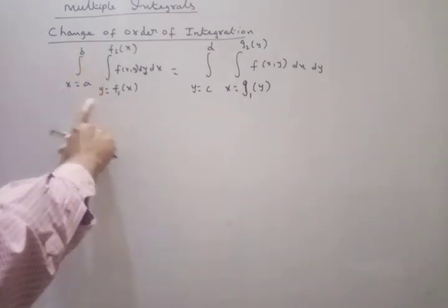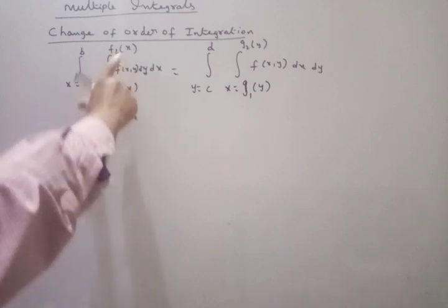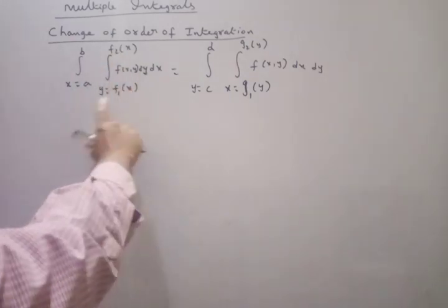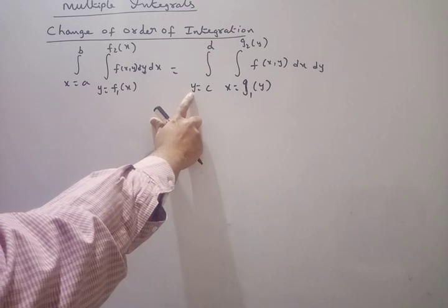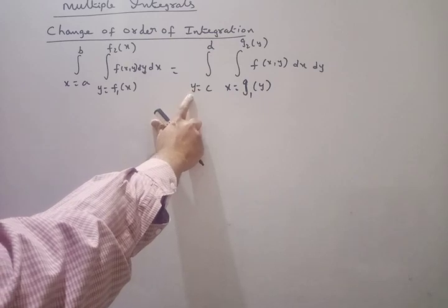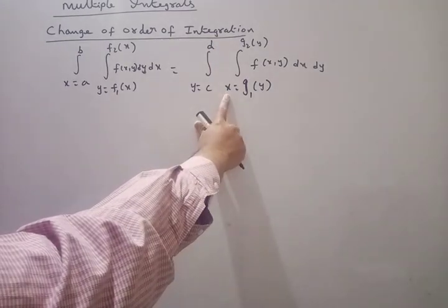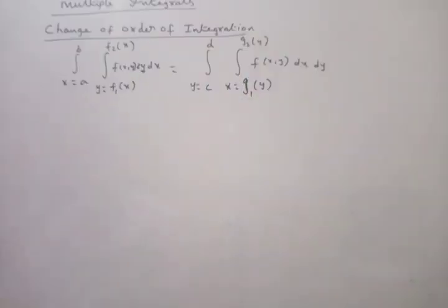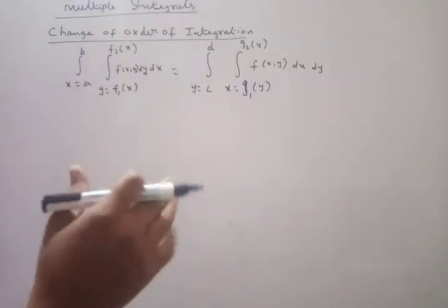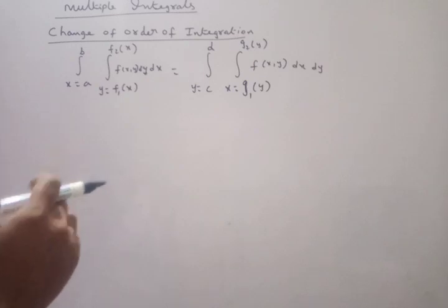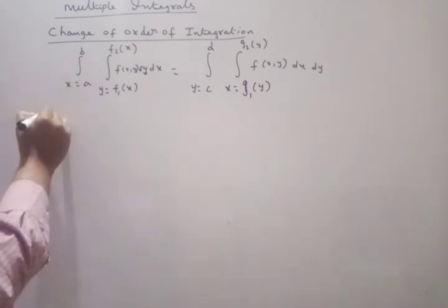So see the form: change of order of integration. X varies from A to B and Y is a function in terms of X. Then how to change - first in place of X we change to Y. So Y will go from C to D and X will change as a function of Y. We solve some examples and you will understand.